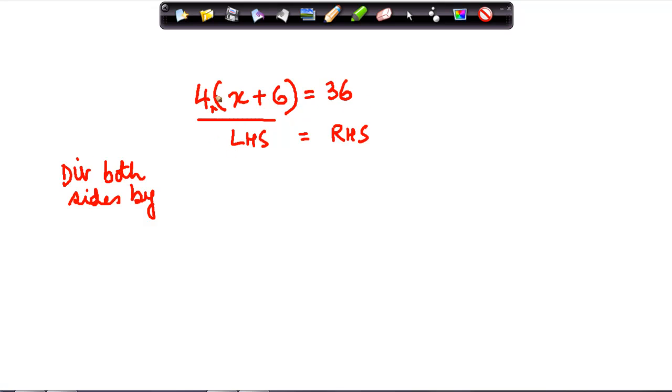So what do I do now? I have 4(x + 6) = 36, so I divide both these sides by 4. So I have 4 times (x + 6) divided by 4 is equal to 36 divided by 4.